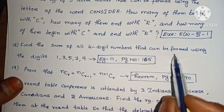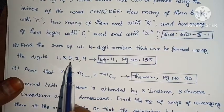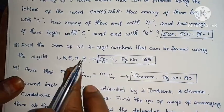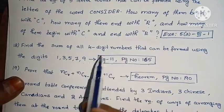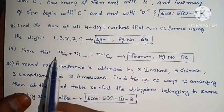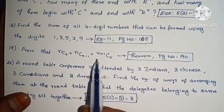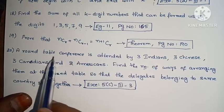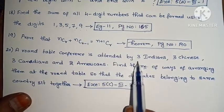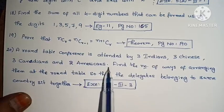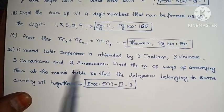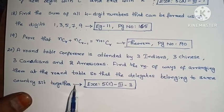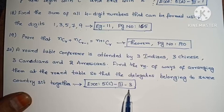Next: find the sum of all 4-digit numbers that can be formed using the digits 1, 3, 5, 7, 9 (Example 11, page 165) — practice this thoroughly as it repeats in many question papers. Next: prove that NCR plus NC(R−1) equals (N+1)CR (page 190). Next: a round table conference is attended by 3 Indians, 3 Chinese, 3 Canadians and 2 Americans. Find the number of ways of arranging them at the round table so that delegates from the same country sit together (Exercise 5, Roman III, third one).